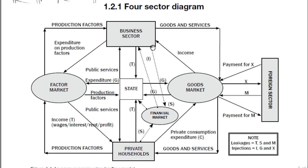Now let's go to firms. Firms purchase factors of production from households in the factor market. Firms use those factors of production to produce goods and services. Businesses then sell goods and services to households, governments, and the foreign sector. They make goods available in the goods market, and they also sell to the foreign sector, which is denoted by X — exports.